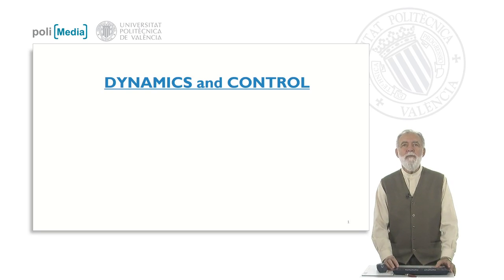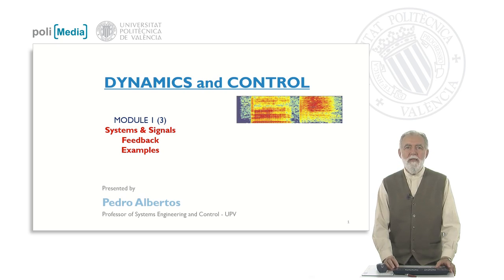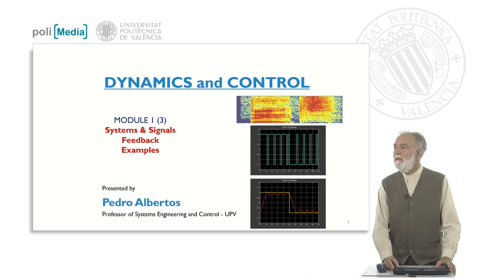Hello everybody. We are going to conclude module one of the course Dynamics and Control. Module one was on systems and signals, with some examples. I am Pedro Albertos, professor of the Polytechnical University of Valencia in Spain.